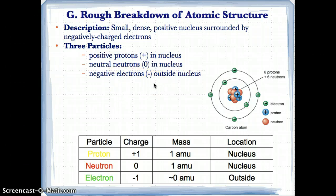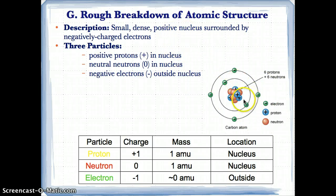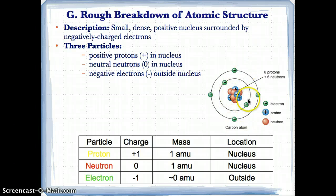Negatively charged electrons are located outside the nucleus. So inside the nucleus you have positively charged protons and neutral neutrons with no charge, while on the outside you have negatively charged electrons surrounding the nucleus.